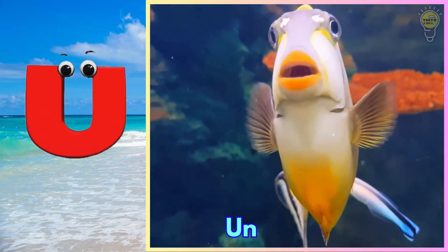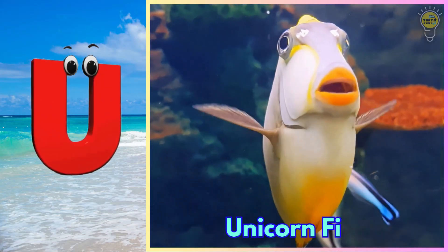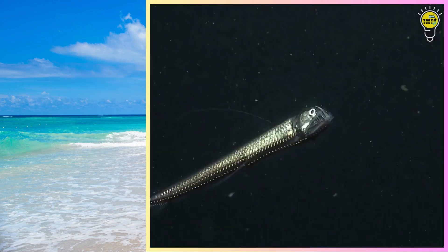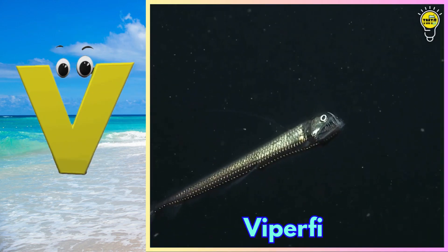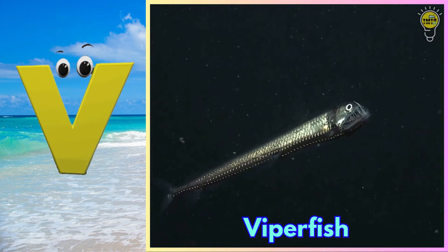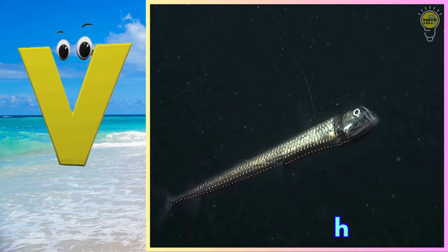U is for unicorn fish. Unicorn fish. V is for viperfish. Viperfish.